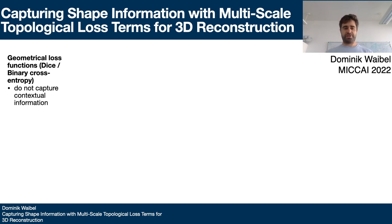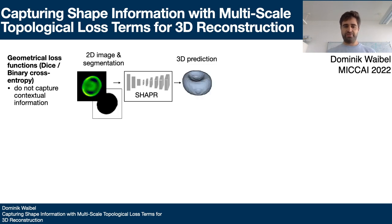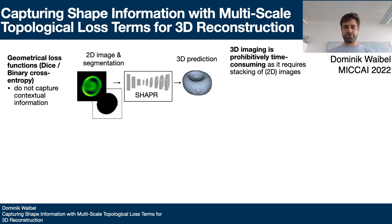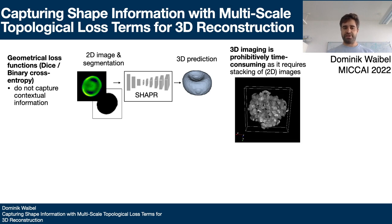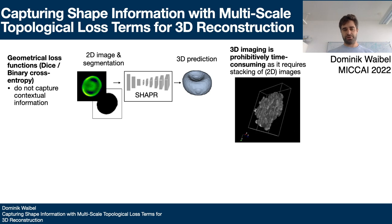Geometrical loss terms such as the dice or binary cross-entropy do not capture contextual information. However, that information might be relevant in a spatial reasoning task. That could be used for speeding up 3D imaging, as that is prohibitively time-consuming as it requires stacking of 2D images.